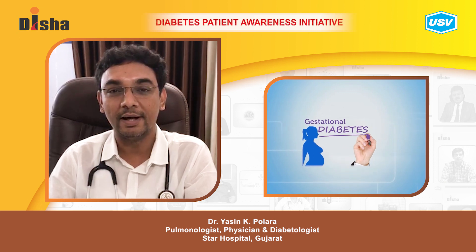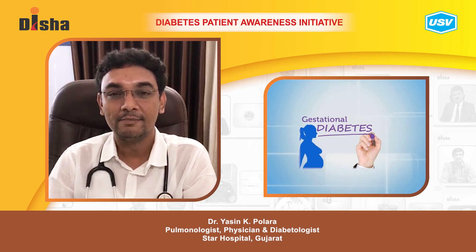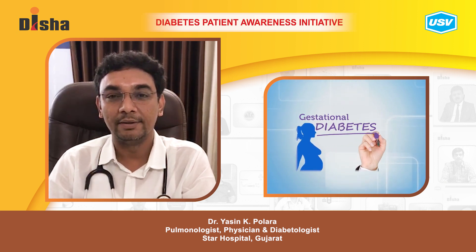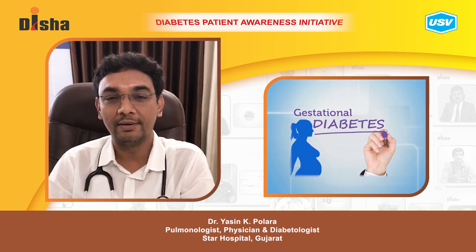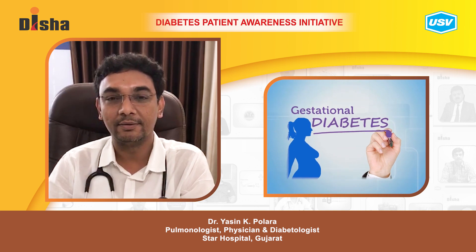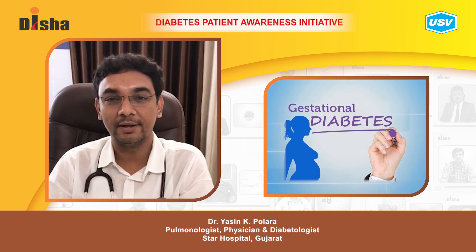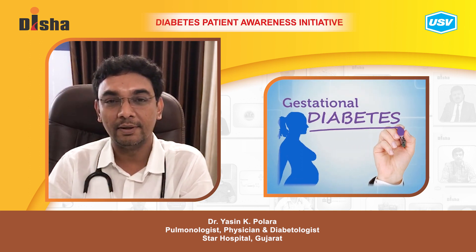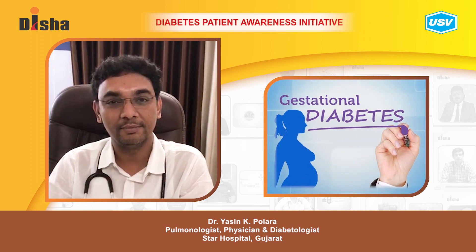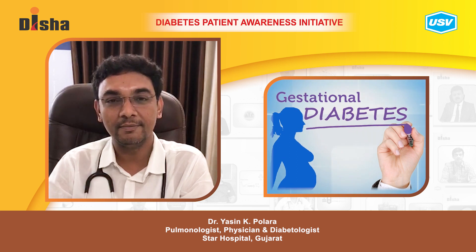What is gastrointestinal diabetes? Increased sugar level during pregnancy is called gastrointestinal diabetes. It commonly occurs in the second trimester of pregnancy.